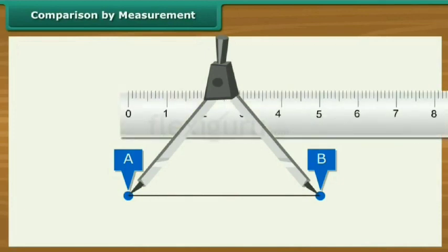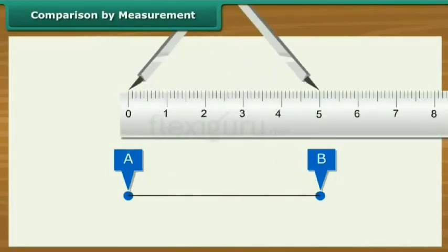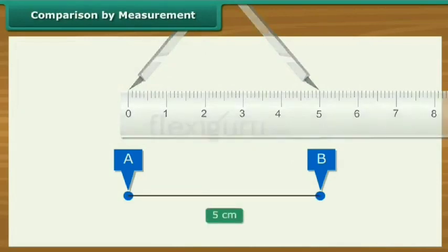Place the divider on the ruler. Write down the measurement of AB as 5 centimeters. Now measure CD in the same way. Write down the measurement of CD as 3 centimeters. Therefore, AB is longer than CD.